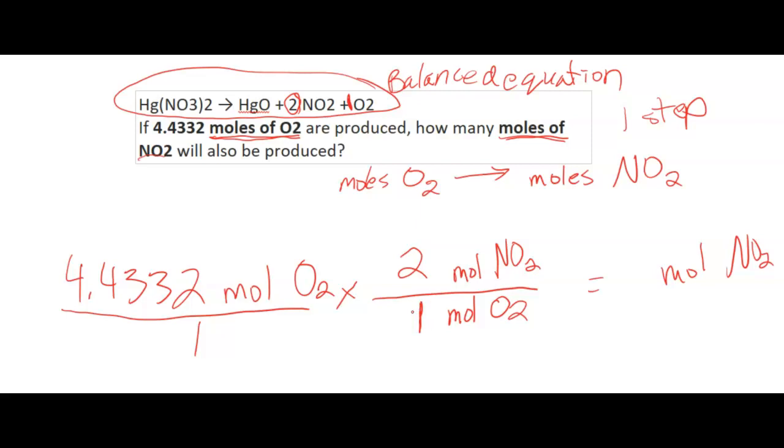So I can simply multiply through. So I have 8.8664 moles of NO2. I make sure I have 5 significant figures in the original number and 5 significant figures in my answer. So my final answer is 8.8664 moles of NO2.